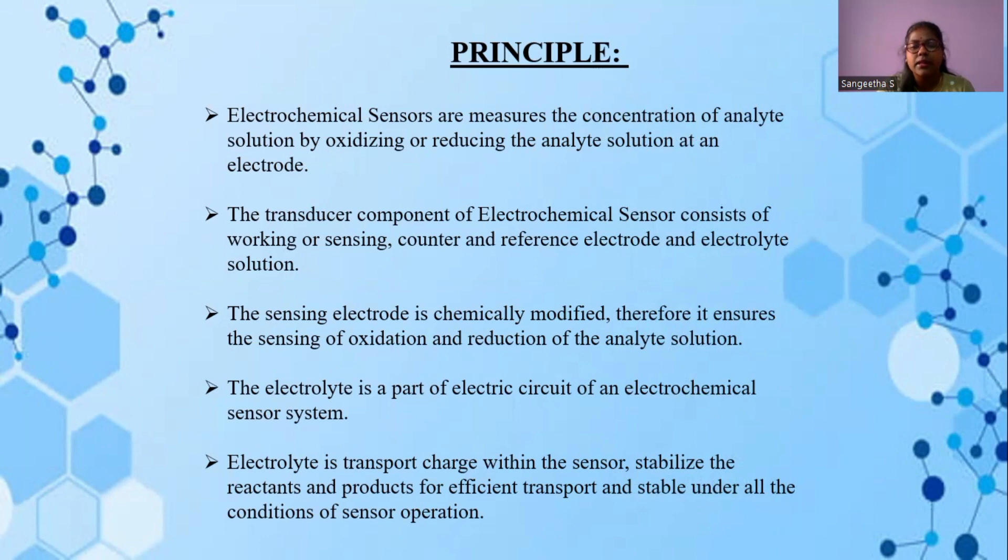The sensing electrode is chemically modified, therefore it ensures the sensing of oxidation and reduction of the analyte solution. The electrolyte is a part of electric circuit of an electrochemical sensor. Electrolyte transports charge within the sensor, stabilizes the reactants and products for efficient transport and is stable under all the conditions of sensor operation.